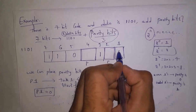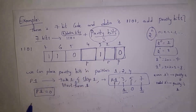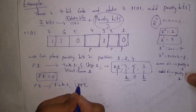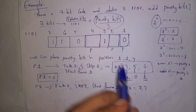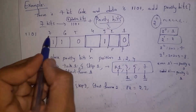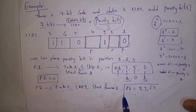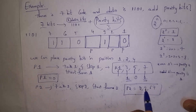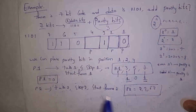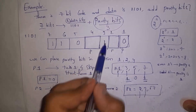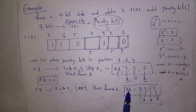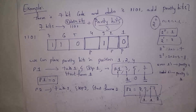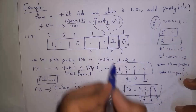To find P2: take 2, skip 2, starting from position 2. So we take positions 2, 3, 6, 7. Position 3 = 1, position 6 = 1, position 7 = 1. There are three 1s (odd number), so P2 = 1.